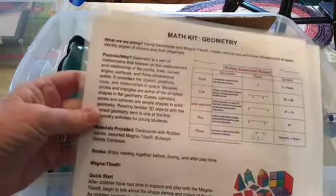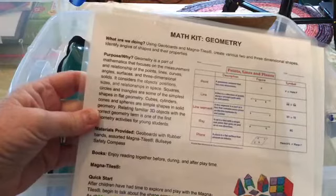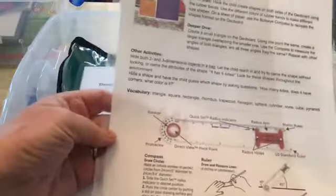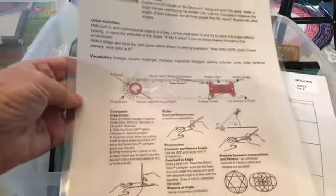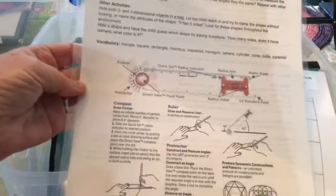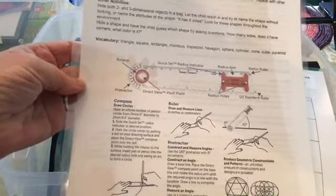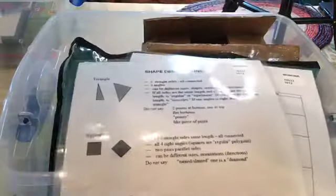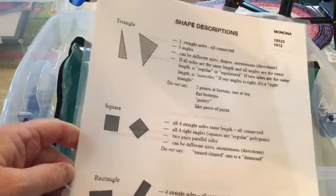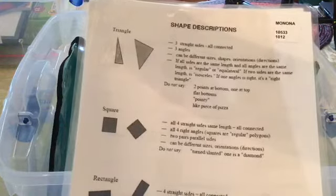Activities include identifying angles of shapes and their properties. There are some instructions for how to play with this tool, a bullseye compass for drawing shapes. There's a handout about shape descriptions to talk about the attributes of different shapes.